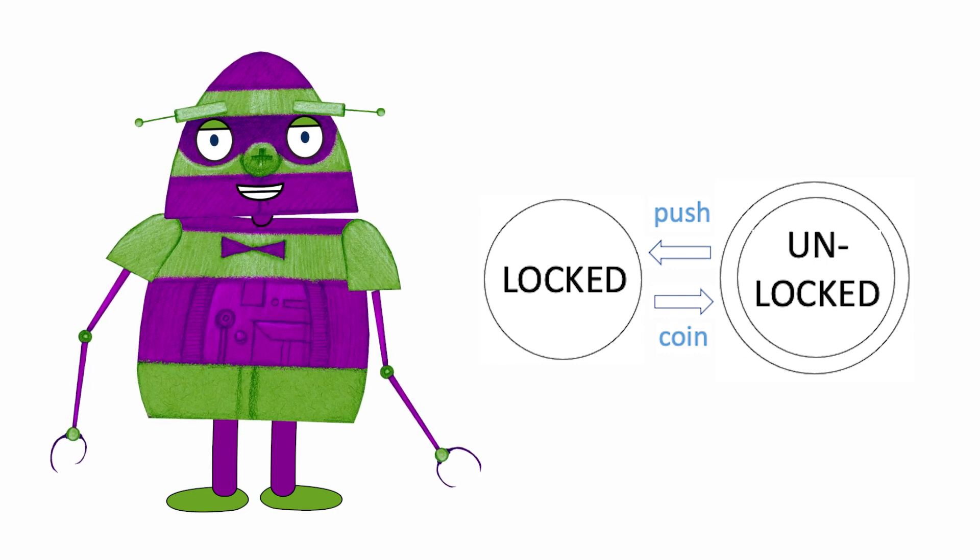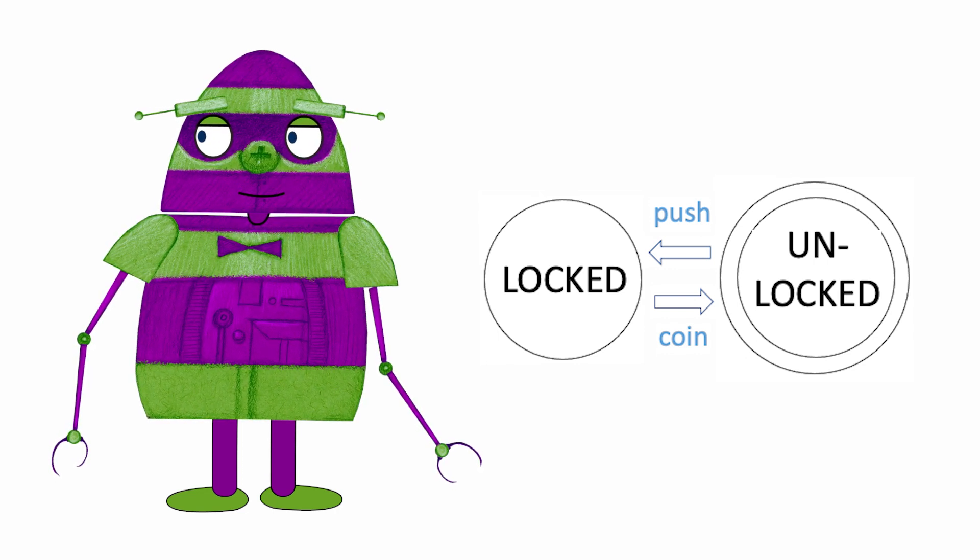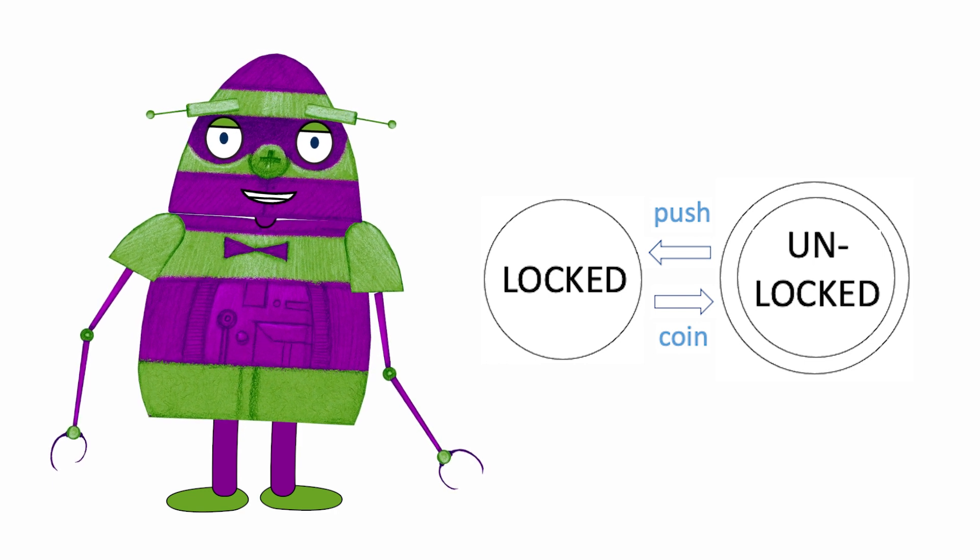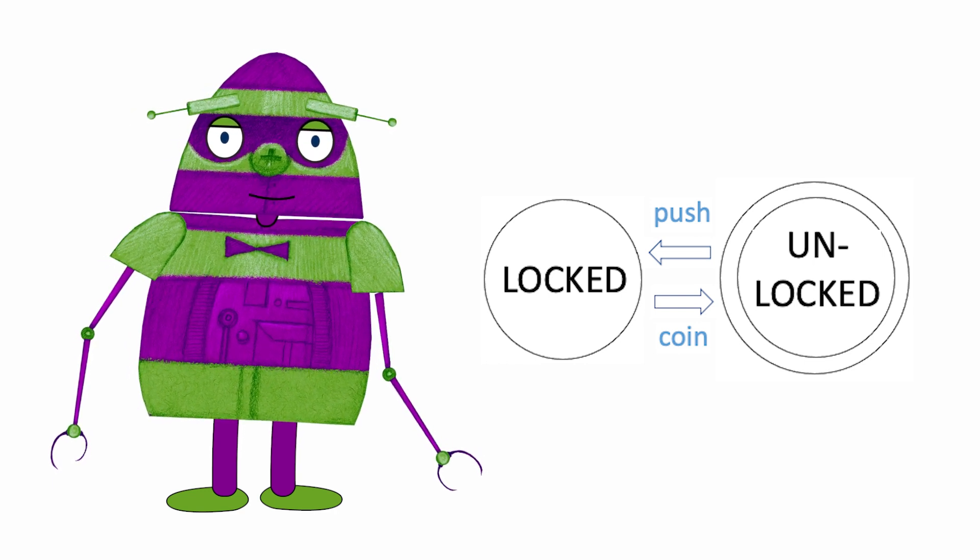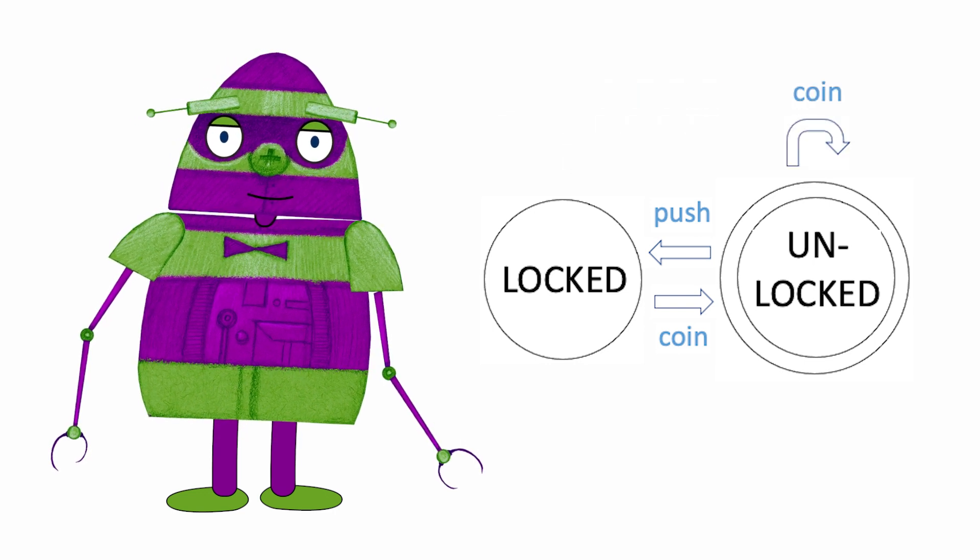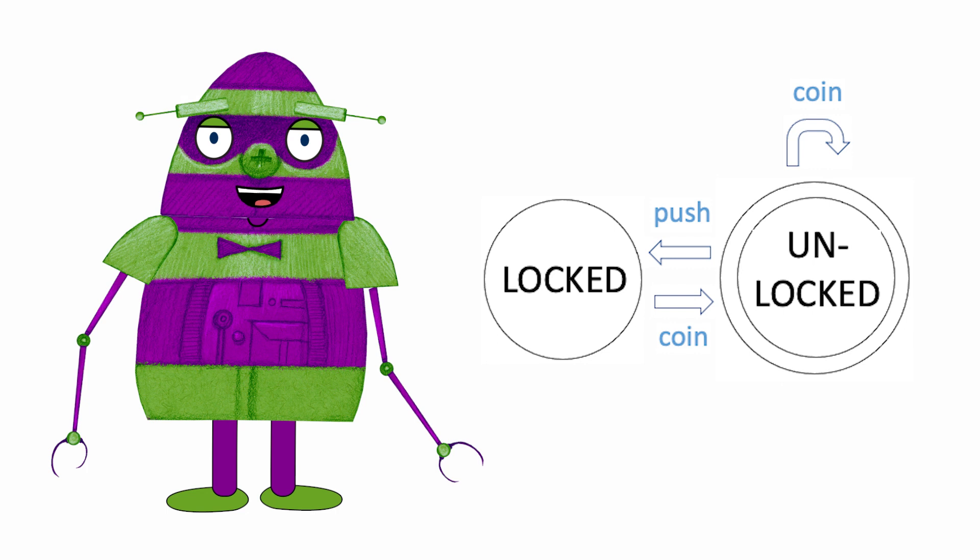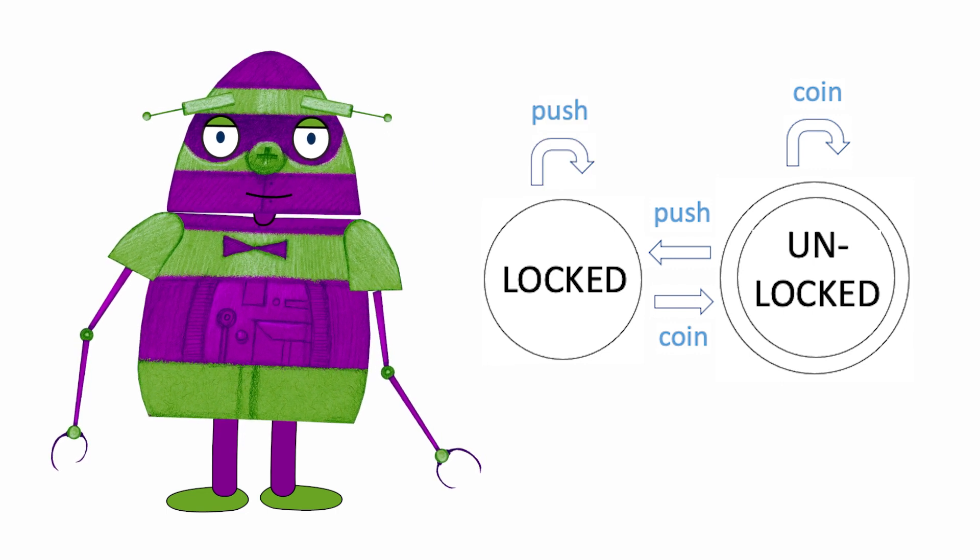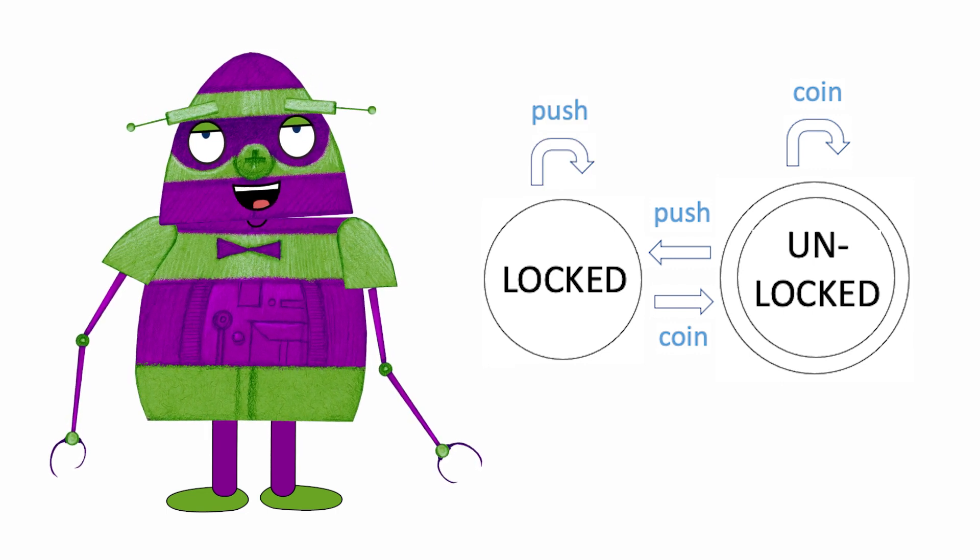Sometimes inputs don't have any effect. That is, they do not lead to a transition from one state to another. For example, if you use a coin or a pass on a turnstile that is unlocked, it remains unlocked. And if you push a locked turnstile without using a coin or a pass, it remains locked.